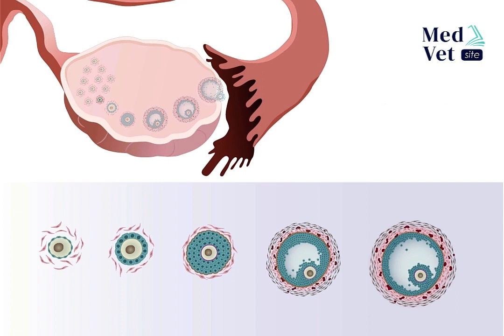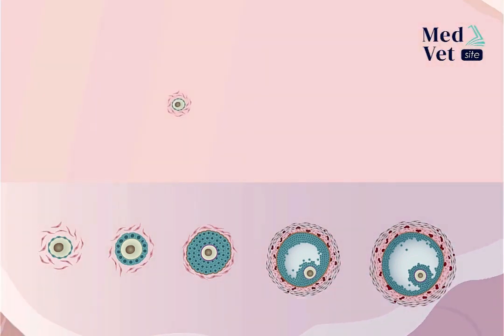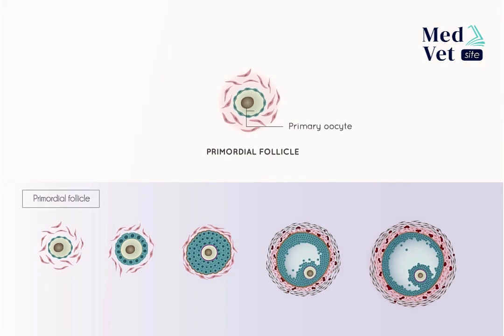The individual process of each follicle within a cohort that develops simultaneously is as follows. Each primordial follicle is surrounded by ovarian stromal cells, which will differentiate in more advanced stages to form another cell type that becomes part of the follicle. The follicular cells in the primordial follicles are flat and are also known as pregranulosa cells.